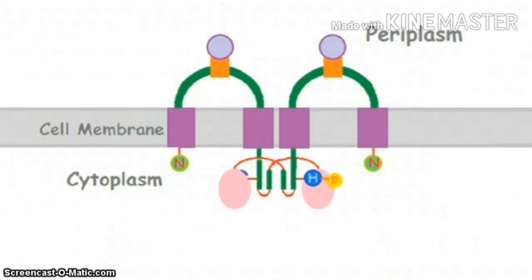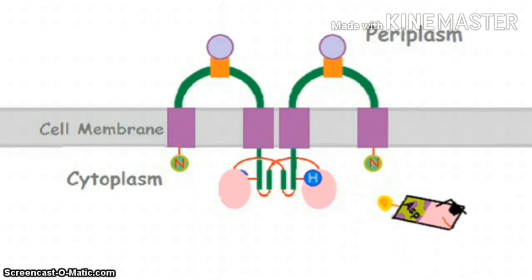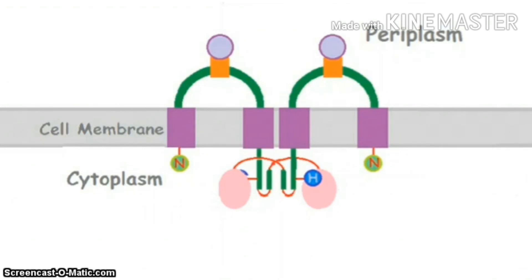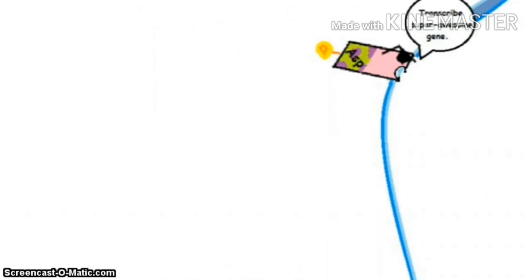Now, after getting phosphorylated, the histidine kinase is said to be activated. The response regulator protein's receiver domain now receives this signal in the form of a phosphate group at its aspartate residue. The binding of this phosphate group to the aspartate residue brings a conformational change in its structure. Now it is able to bind to the promoter region of the DNA, thus bringing a particular response of the bacteria towards this environmental signal.